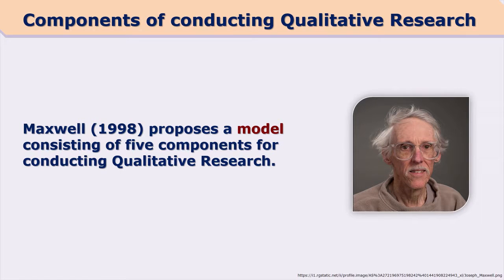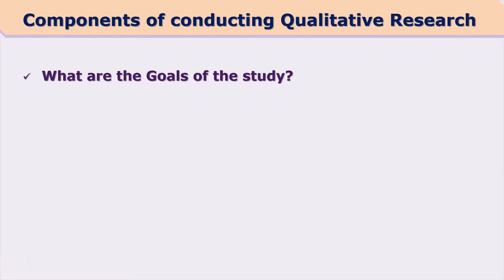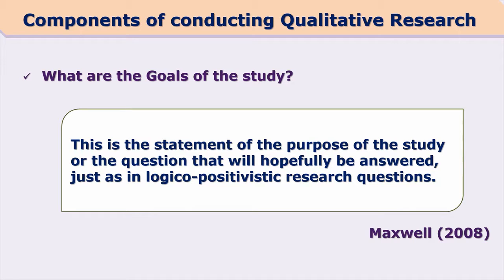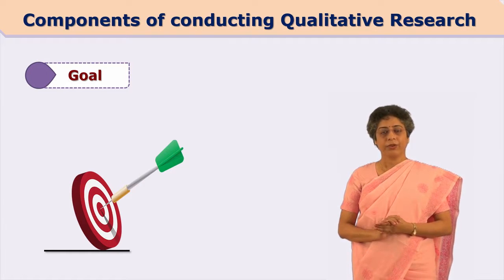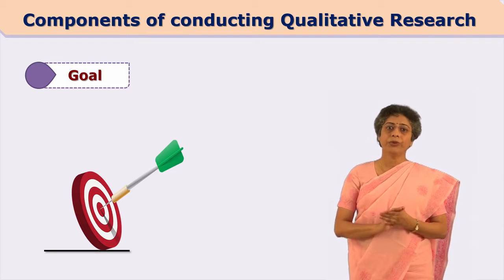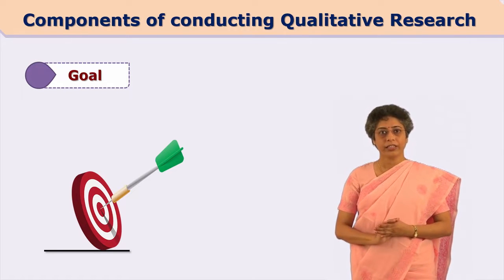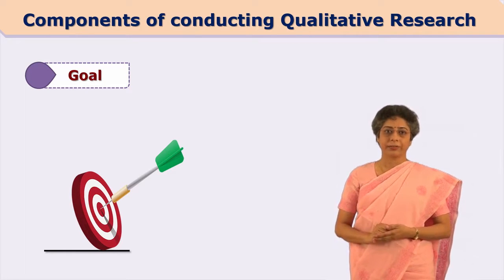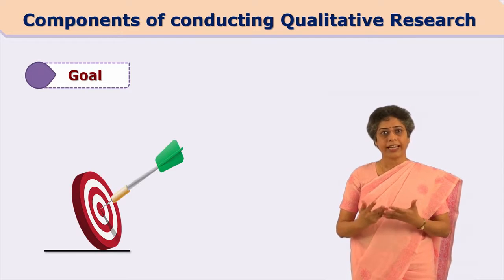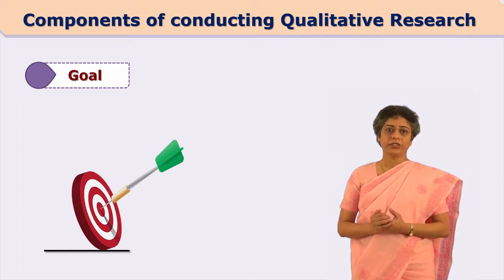The first component is the goals of the study. Goals are statements of purpose of the study or the questions that will hopefully be answered, just as in logical positivist research questions. We first ask ourselves: what do we want to study? What do we want to find out? Accordingly we define our goals, and on the basis of these goals we decide the next steps.